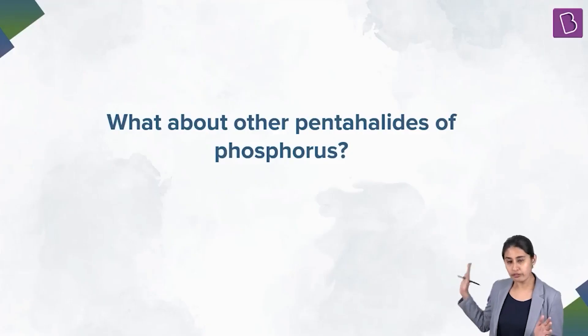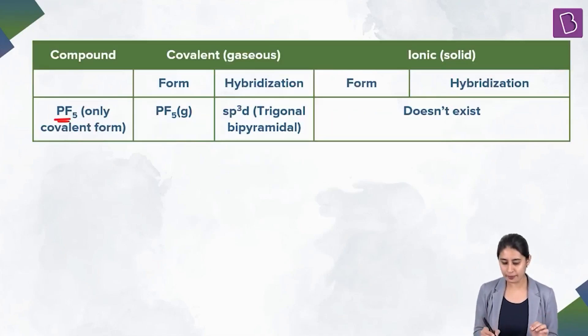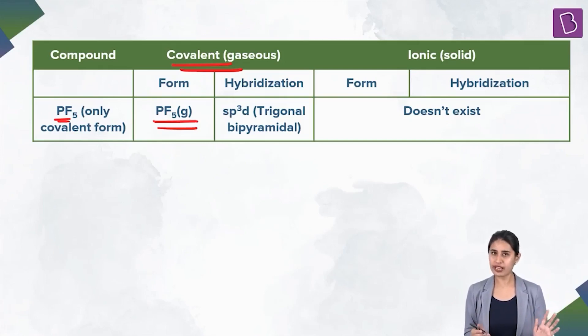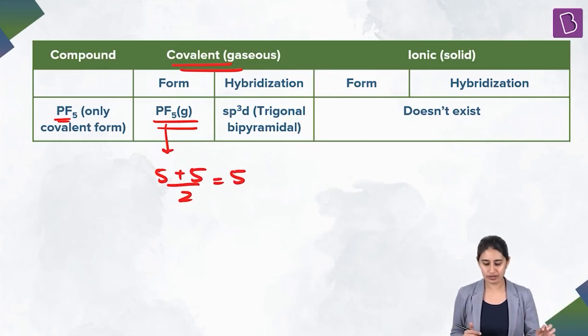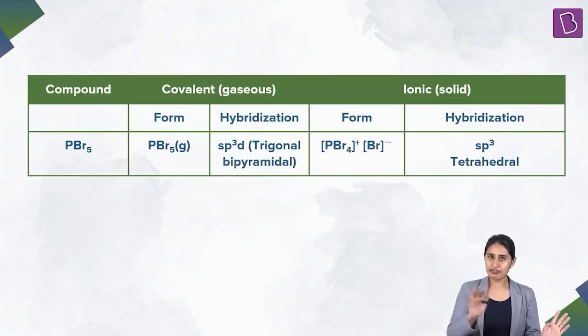Other phosphorus pentahalides you must remember. The first one is PF5. PF5 exists as a gaseous compound. Phosphorus is 5 plus 5 by 2, steric number is 5. TBP, trigonal bipyramidal geometry, whereas ionic solid does not exist for PF5.